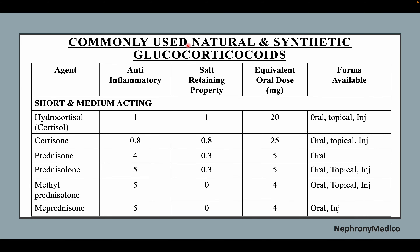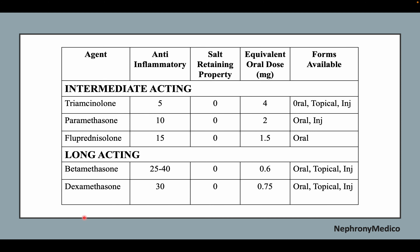Commonly used natural and synthetic glucocorticoids include hydrocortisol (cortisol) and cortisone, which are short-acting; prednisolone and methylprednisolone, which are medium-acting; and intermediate-acting agents like triamcinolone, paramethasone, and fluprednisolone. Long-acting glucocorticoids include betamethasone and dexamethasone.